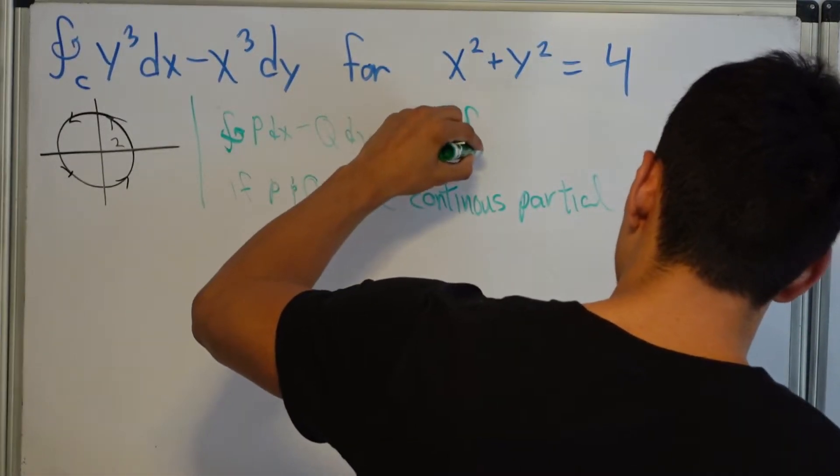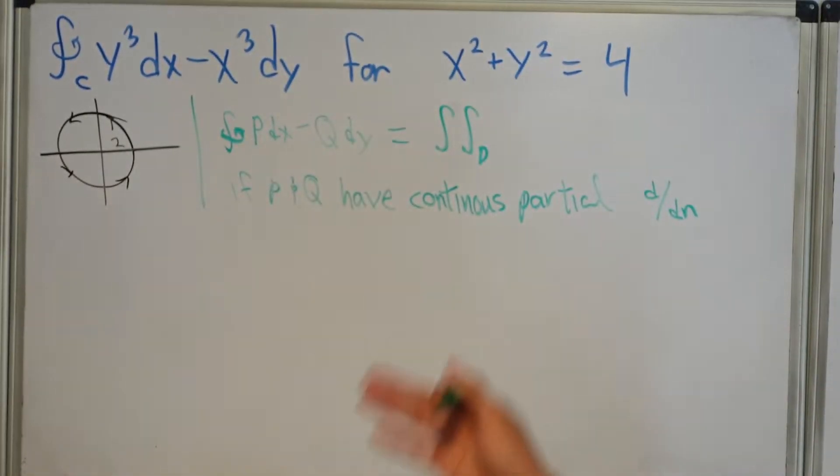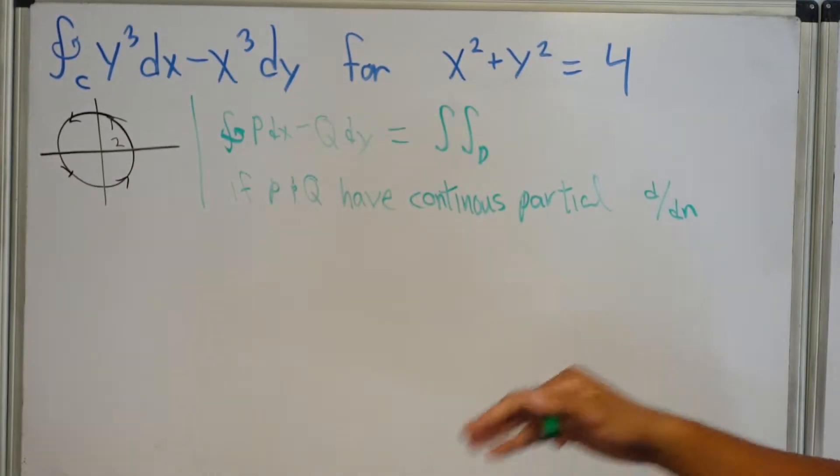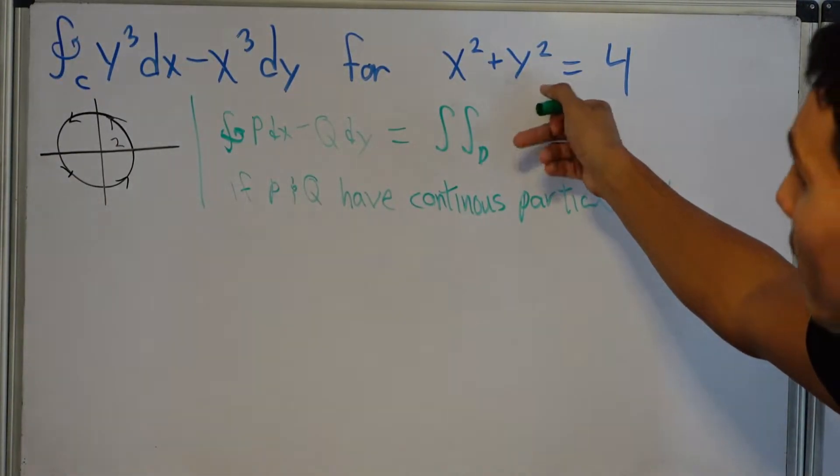We can transform this into double integral over some domain. So now we're not just going around a curve. We're integrating a domain, right? We're integrating an area using this double integral.